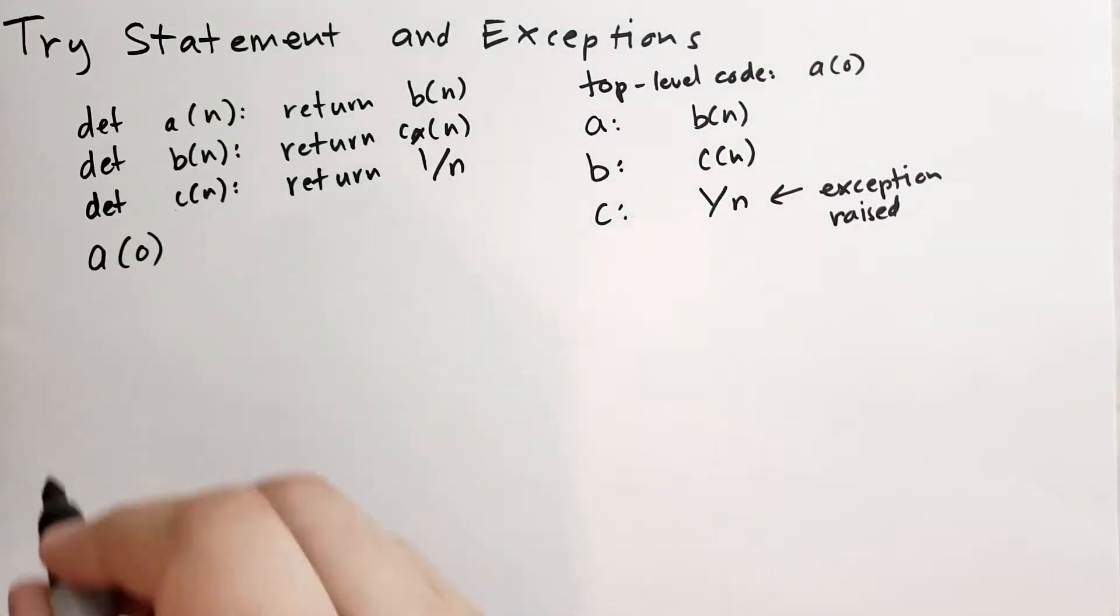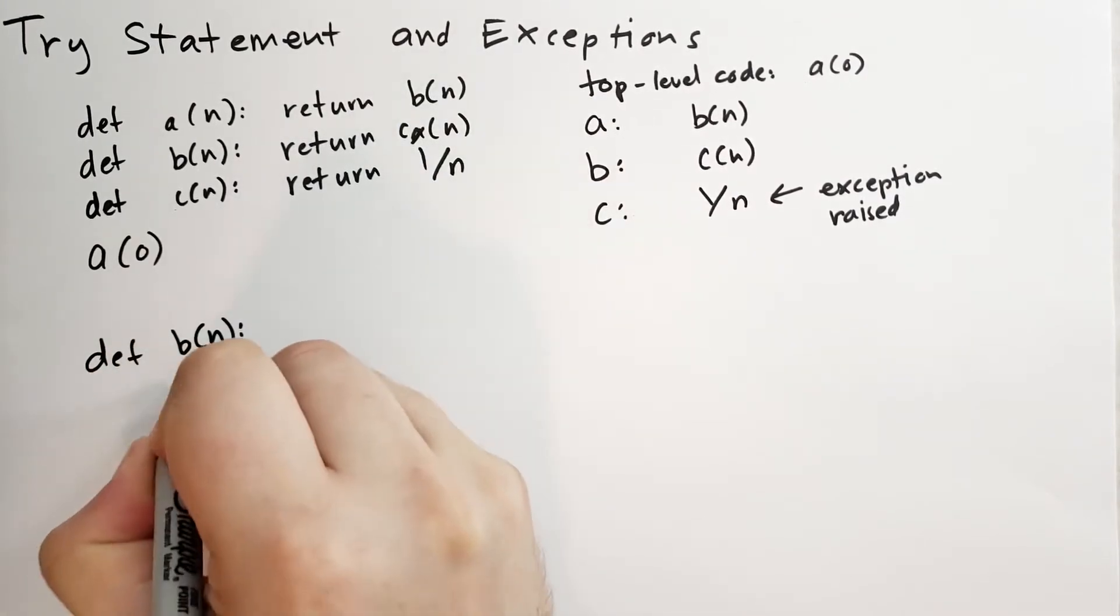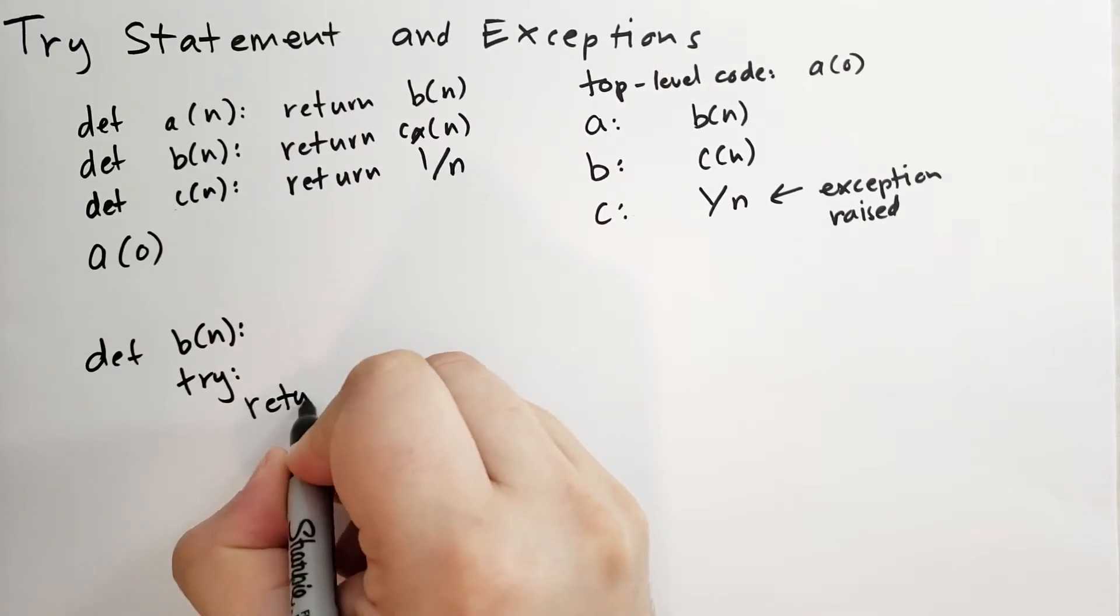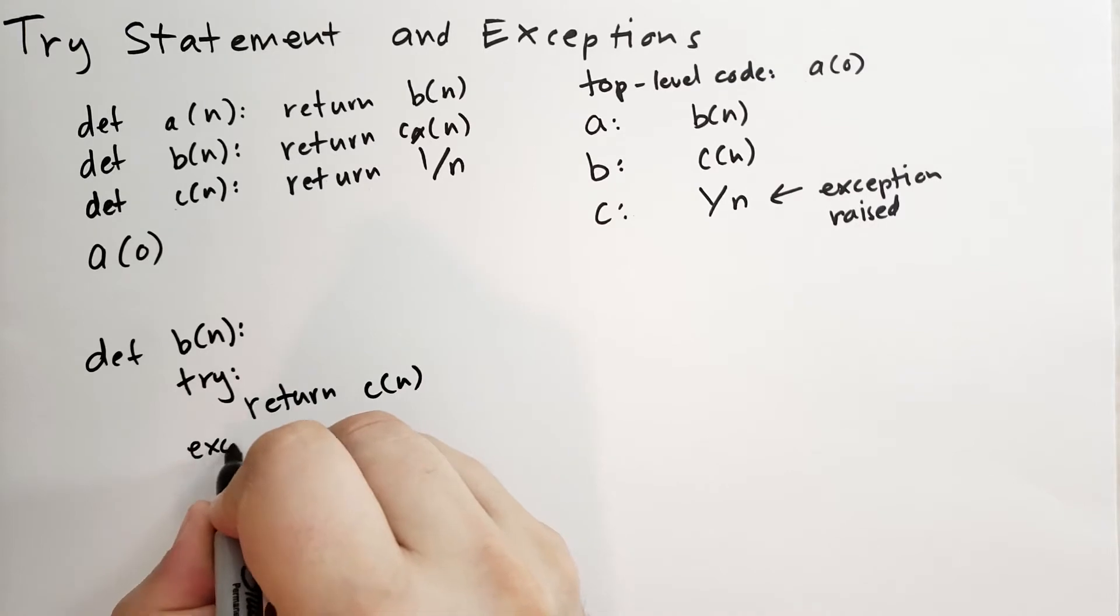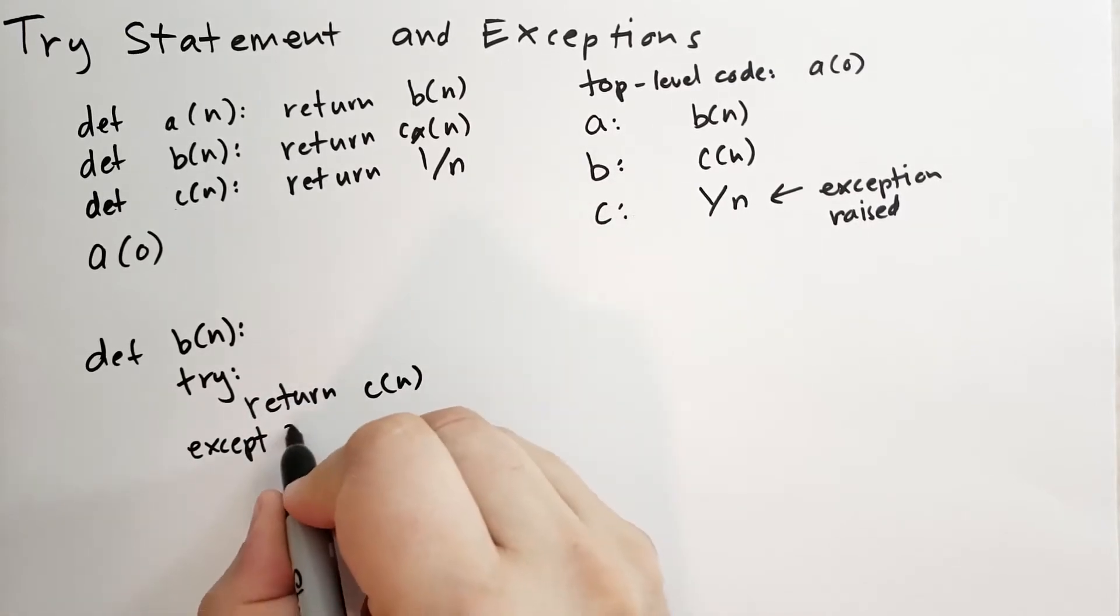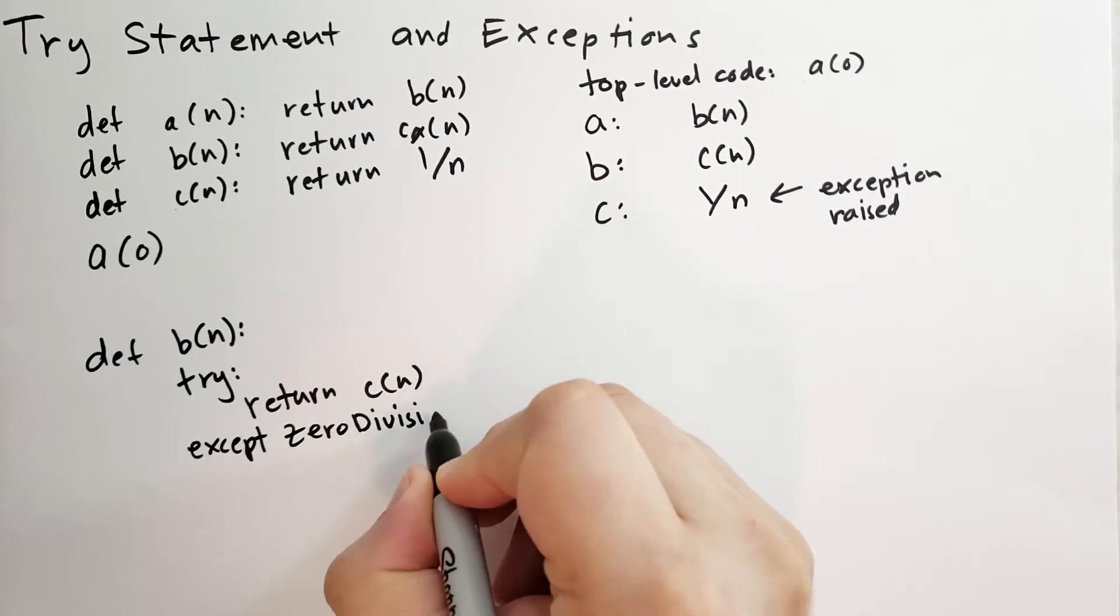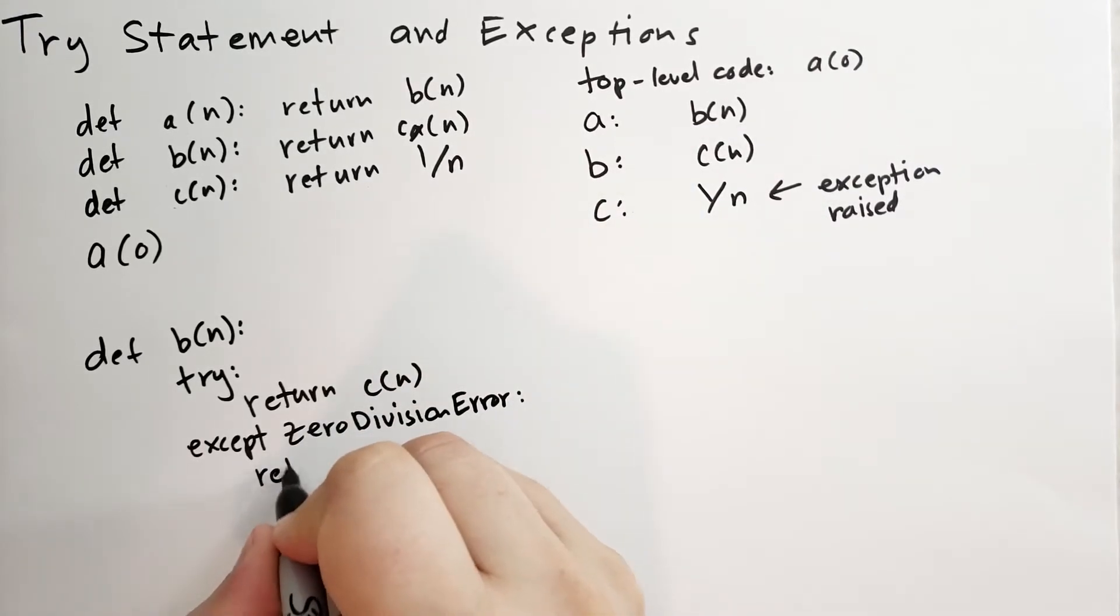Let's say we modified the code slightly. We're going to define b to use the try statement to call c of n. If it sees a zero division error, it's going to return 37 instead.